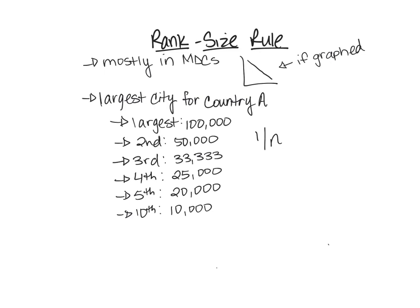A really good example of rank size rule is Germany — German cities follow that rule well. The US kind of does too, but metro areas complicate our numbers.